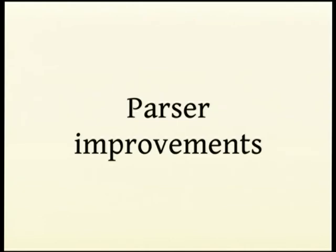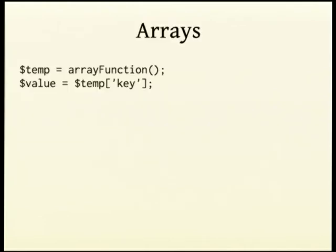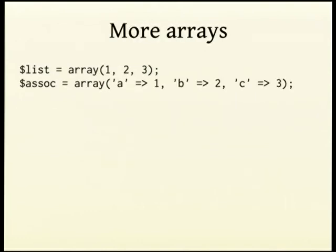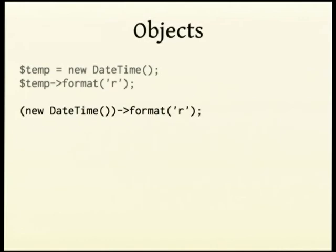There are some parser improvements as well which seem to excite people. You can now do things like dereference arrays directly from a function call — sorry it took that long. You can also now declare arrays with square bracket syntax, though the separator between keys and values is still the hash rocket (=>) as the Ruby people call it. You can also instantiate and call methods on objects directly — and I think that's probably the one legitimate use of it, with DateTime.